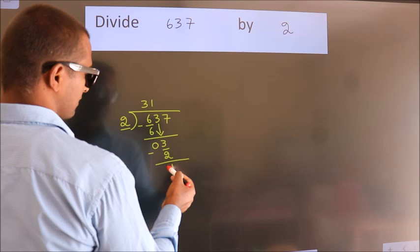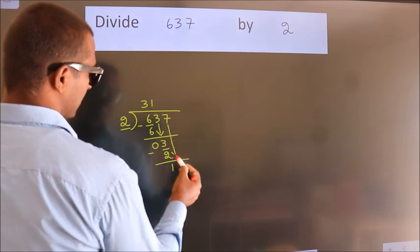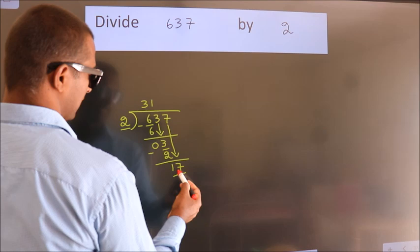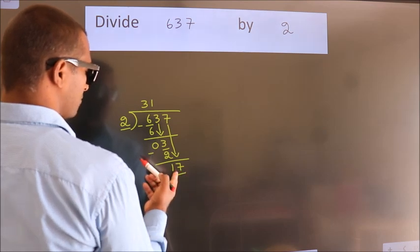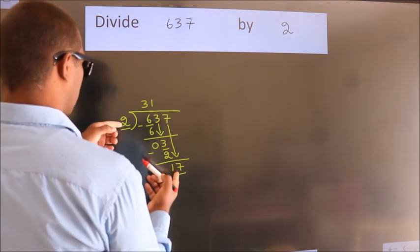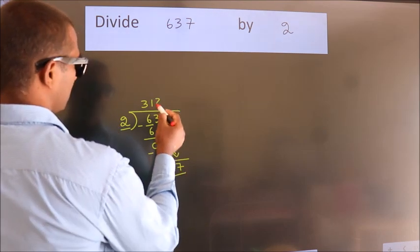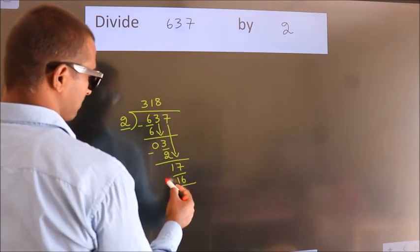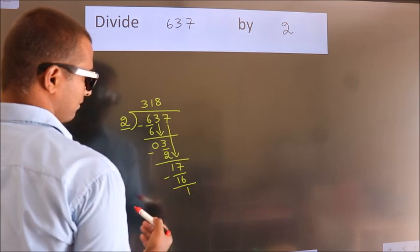After this, bring down the beside number. So 7 down, giving us 17. A number close to 17 in the 2 table is 2 times 8 is 16. Now we subtract. We get 1.